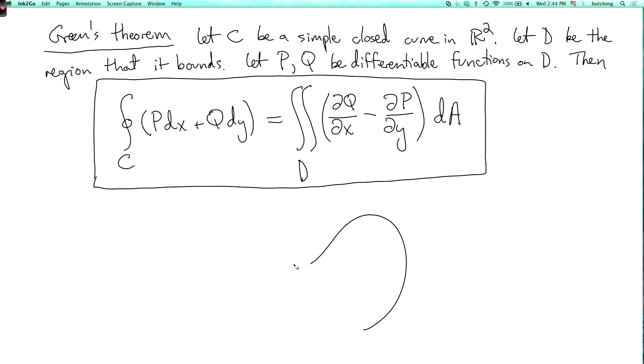If here's our curve C, here's the domain that it bounds, we're relating a double integral over the whole region D of this expression ∂Q/∂x minus ∂P/∂y, to the line integral around the boundary of the region with the positive orientation of P dx plus Q dy.